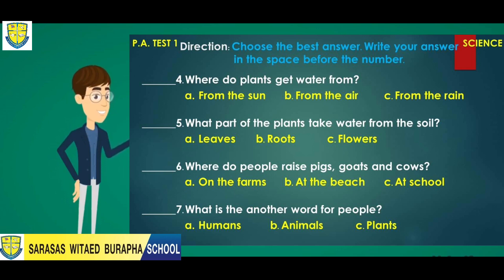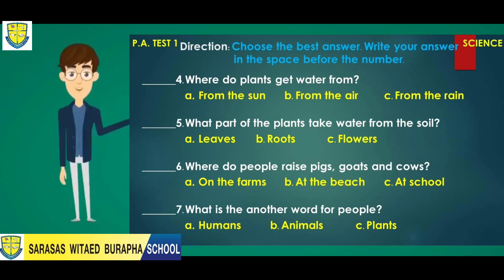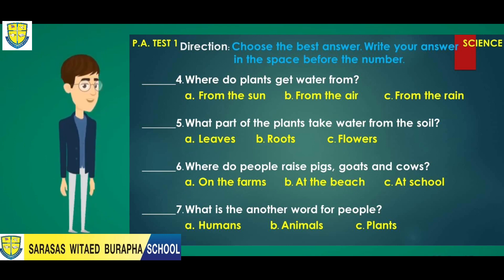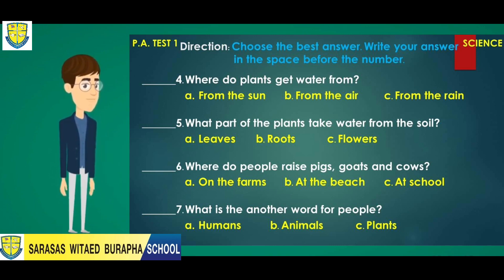Number six: Where do people raise pigs, goats, and cows? A. On the farms. B. At the beach. Or C. At school.